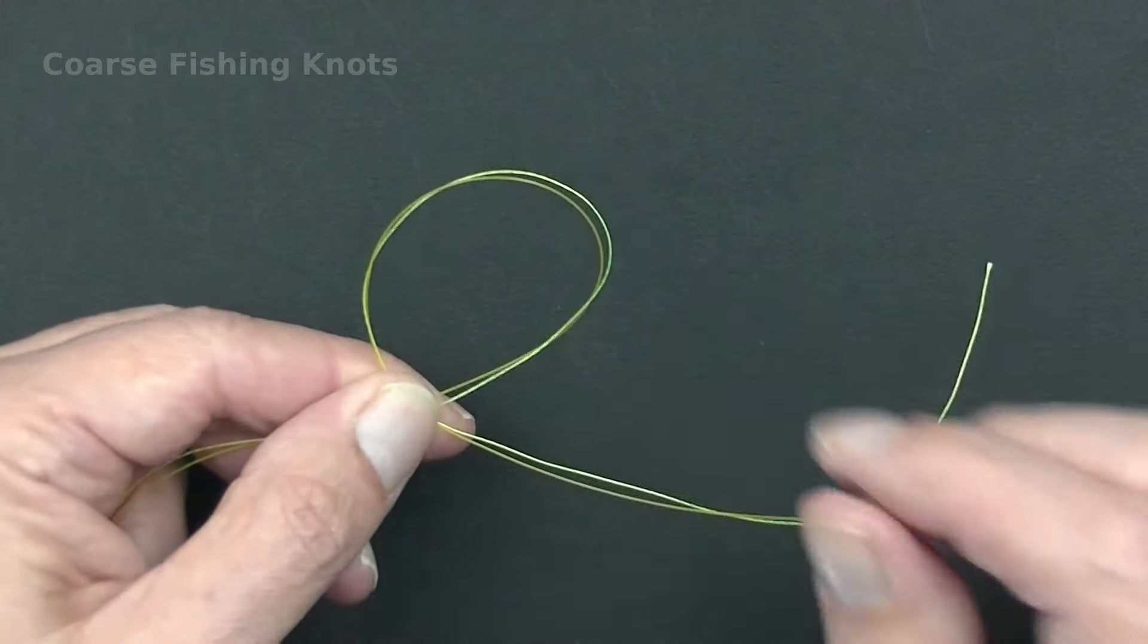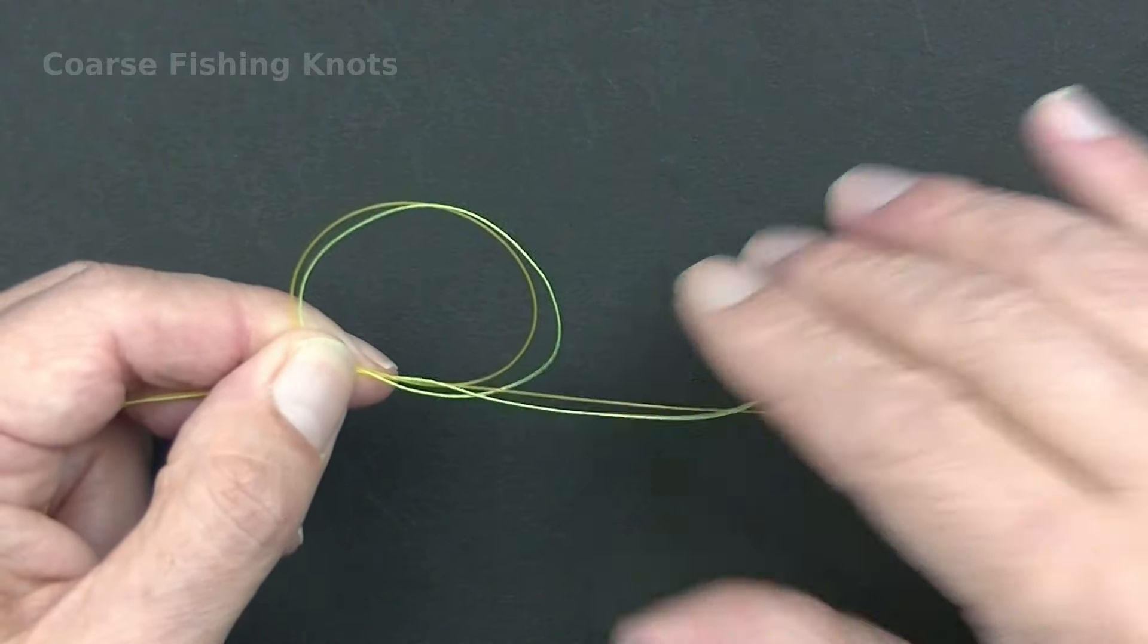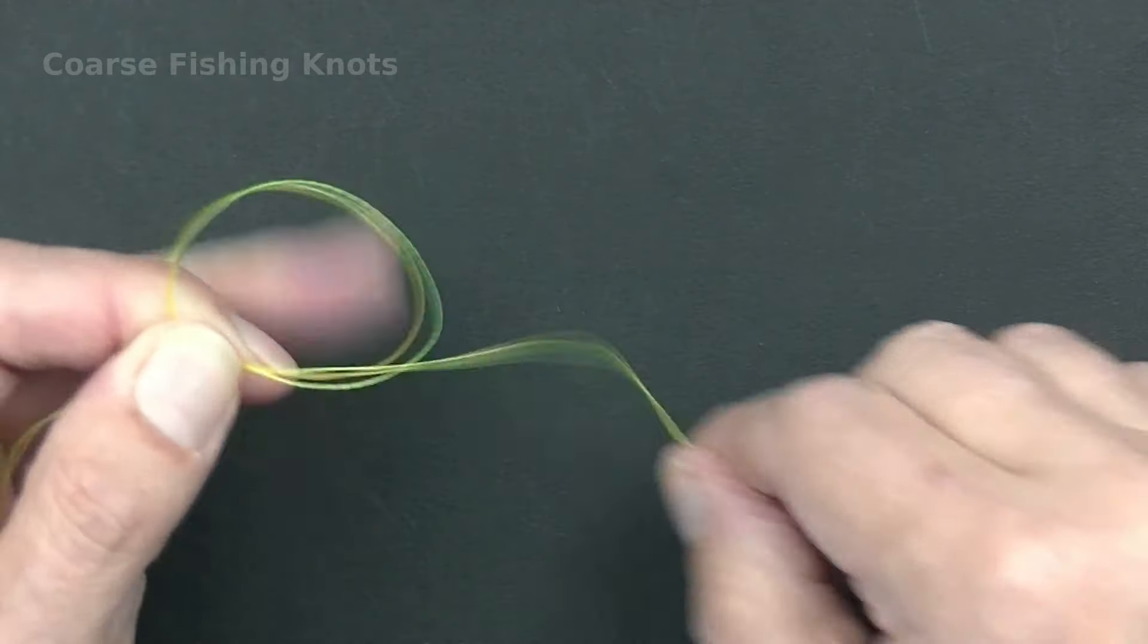Keeping the braid and nylon lines together, pull the leader and the tail end from the main line through the loop four times.